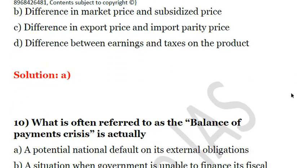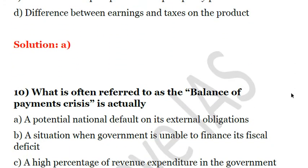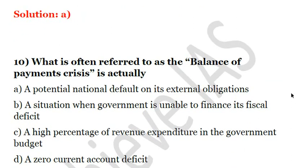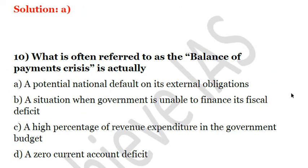Next question: what is often referred to as the balance of payment crisis? A. A potential national default on its external obligations. B. A situation when the government is unable to finance its fiscal deficit. C. A high percentage of revenue expenditure in the government budget. D. A zero account deficit. The answer is A — a potential national default on its external obligations.